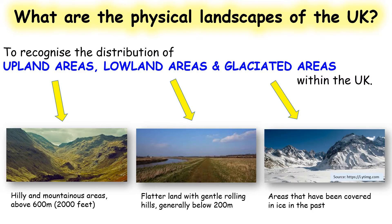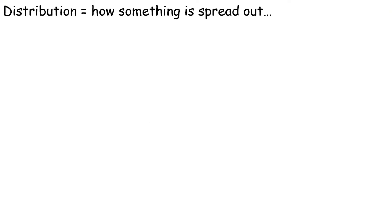Finally, glaciated areas within the UK — these were the areas covered in ice 10,000 years ago when the last glaciation ended. So that's it for today: upland areas, lowland areas, and glaciated areas.